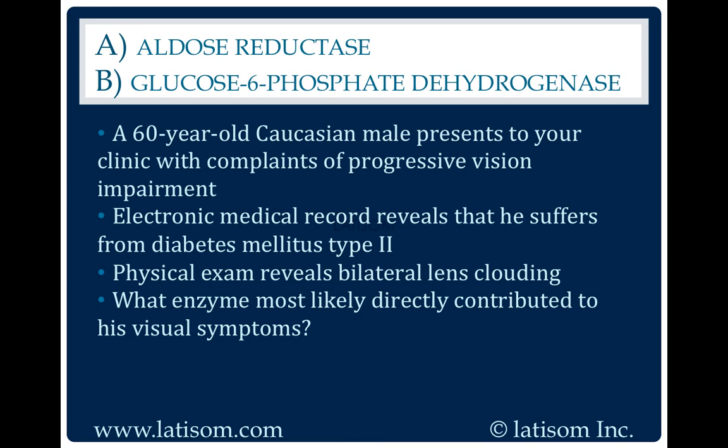Aldose reductase. Aldose reductase converts glucose to sorbitol. Intracellular accumulation of sorbitol can lead to osmotic cellular injury that can result in hydropic lens fibers that degenerate and form sugar cataracts.